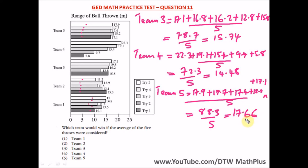The team that wins is the one with the highest average of the five throws, and that is team 5. Our answer is option 5. Don't waste time calculating the lower teams — just look at your graph, strike some out, and go to the teams where you feel the average is highest.